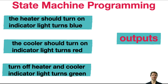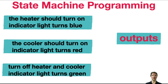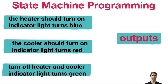In any state machine design process, I always begin by thinking about the different states of the system, which always corresponds with the outputs we want to control. We have three states: in the first, the heater is on and the indicator light turns blue — that's too cold. In the second, the cooler turns on — that's too hot. In the third, we are in range. So our three state names are too hot, too cold, and in range — or just right. Let's program that in the micro:bit simulator.